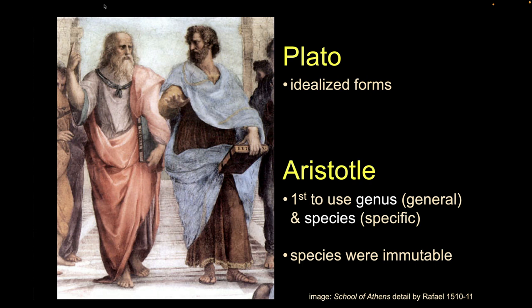Along with Plato, Aristotle thinks that stuff is non-changing. When we have a snake, a snake is always a snake — it's always been a snake and always will be. And pretty much in the Western world, we're stuck with that for a long time. Amazingly creative thinkers, the Greeks and Romans, and then we enter a period of not a whole lot of intellectual innovation for a long period of time.